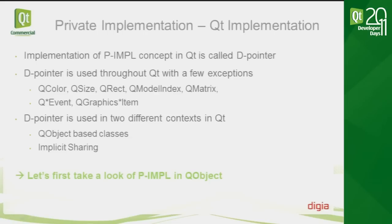In Qt, the implementation of the private implementation concept is called the d-pointer, and it is used basically everywhere in Qt code. There are some exceptions — for example, QColor, QSize, and QRect are considered trivial classes that don't require future changes, so there's no sense adding extra indirection to those classes since it would just add overhead. There are also other classes where performance is so critical that private implementation doesn't fit, such as QGraphicsItems.